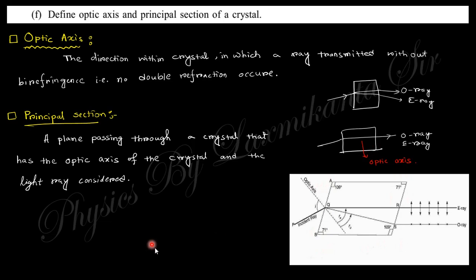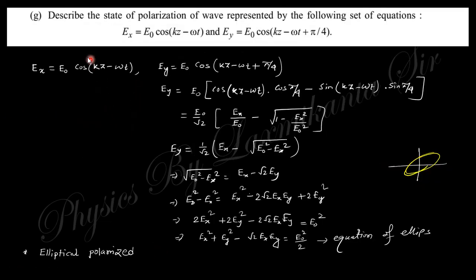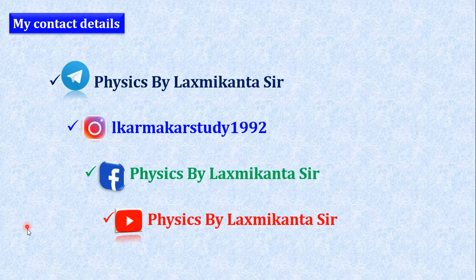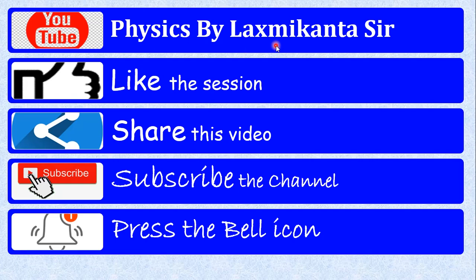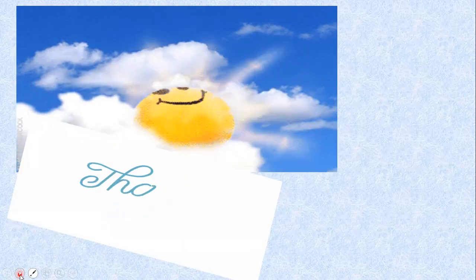The next question says: describe the state of polarization of the wave represented by the given equations, where Ex and Ey are given. Decomposing using the cos(A−B) formula and evaluating, you obtain an equation that is nothing but the equation of an ellipse — so this is elliptically polarized light. If there is any doubt, comment in the comment box. You can connect with me via my Telegram channel and YouTube channel. If you learned something from this session, share this video with your friends and subscribe to the channel. Press the bell icon for notifications of upcoming videos. Take care, we'll meet in the next video — thank you.